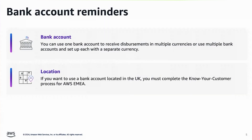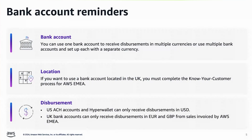If you want to use a bank account located in the UK, you must complete the Know Your Customer (KYC) process for AWS EMEA. For disbursements, US ACH accounts and HyperWallet can only receive disbursements in USD. UK bank accounts can only receive disbursements in Euro and GBP from sales invoiced by AWS EMEA.